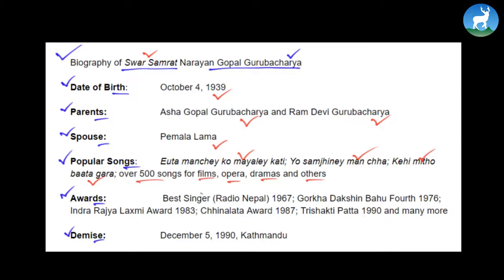He got different awards: the Best Singer Award from Radio Nepal in 1967, Gorkha Dakshin Bahu fourth in 1976, Indira Rajya Lakshmi Award in 1983, Chenna Lata Award in 1987, Trishakti Pata in 1990, and many more. He died on December 5, 1990, in Kathmandu. So that is his short biography.